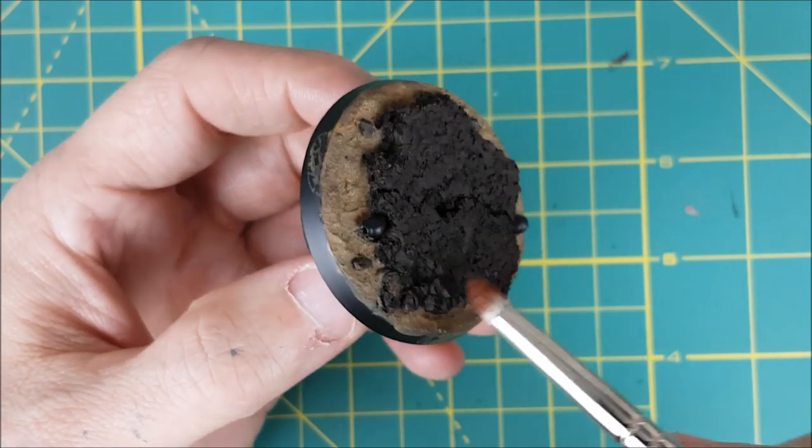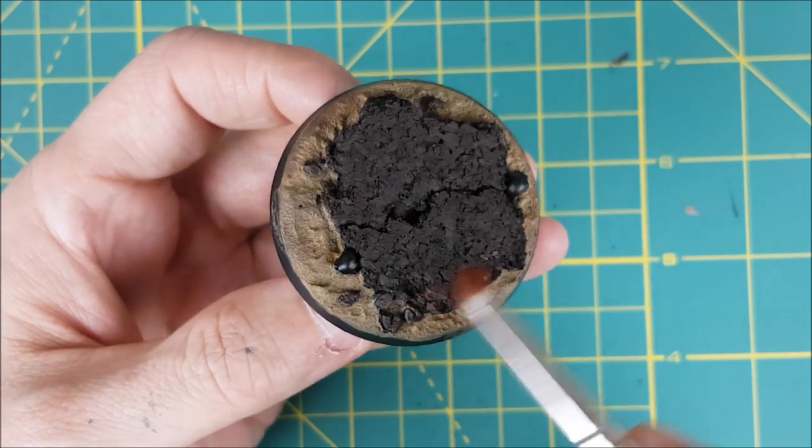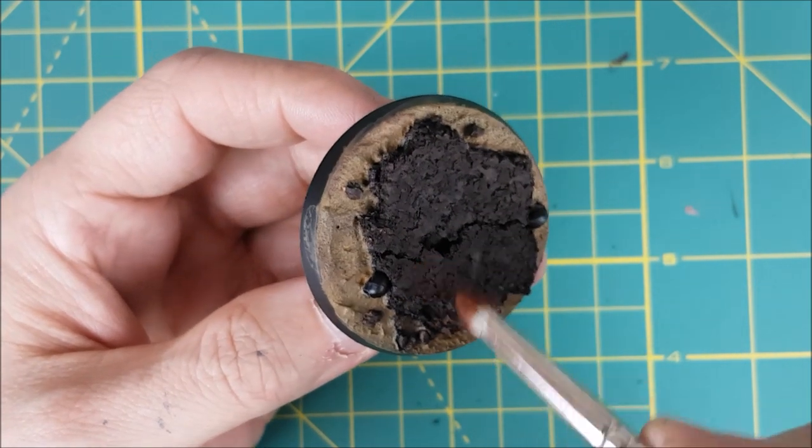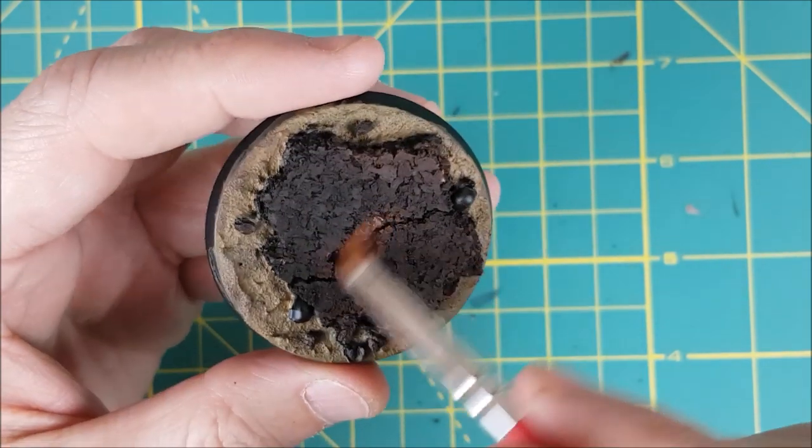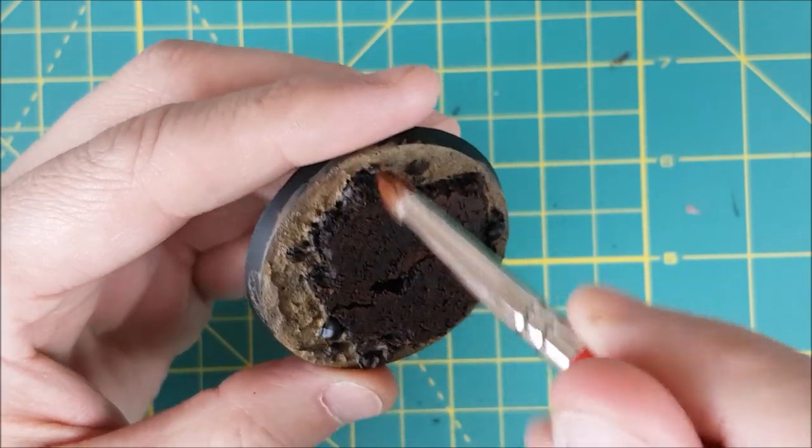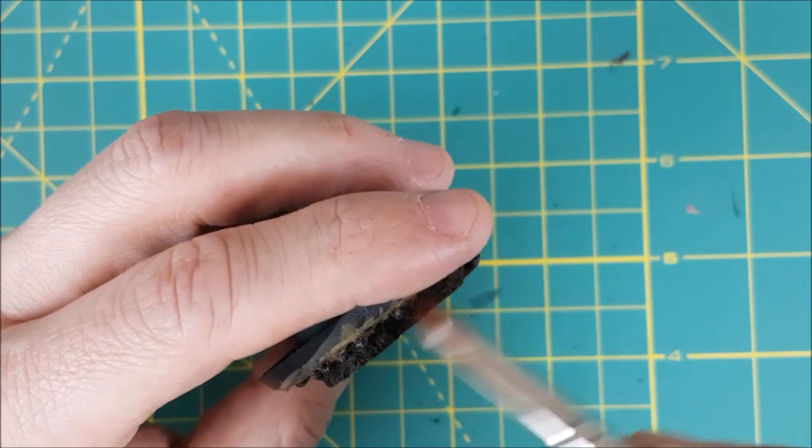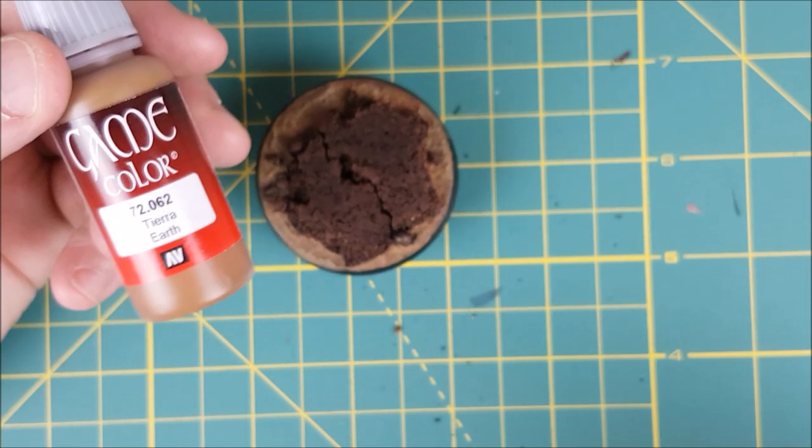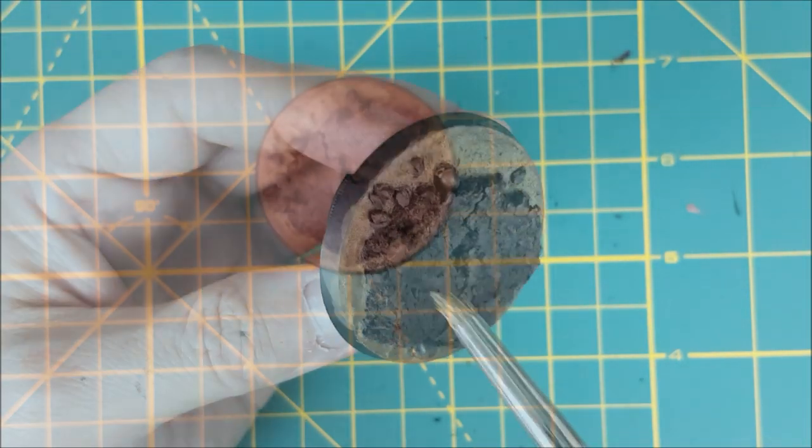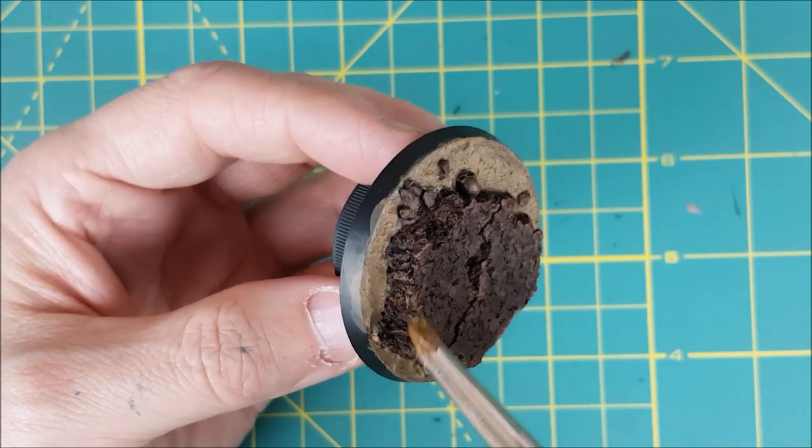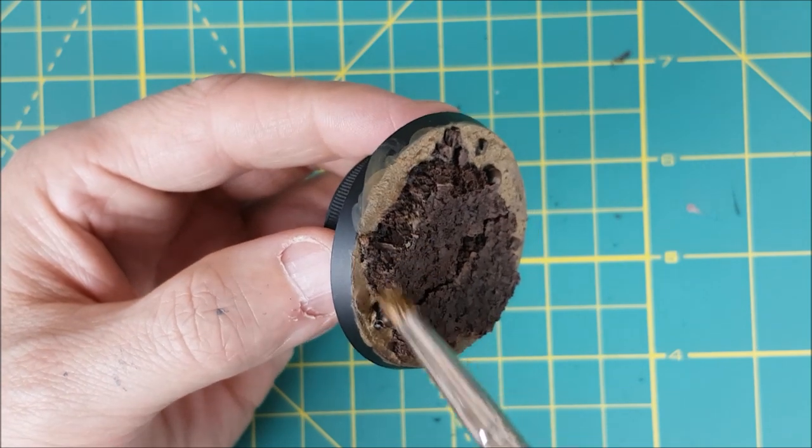Next, I'm dry brushing all of the cork and rocks with Mournfang Brown from Games Workshop. This is a really heavy dry brush and I'm making sure to hit all parts of the cork with it except for the deepest nooks and crannies. Now I'm going back to the exact same color I used on the earth texture, my light brown, and I'm doing a lighter dry brush of this all over the cork and the rocks.